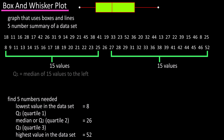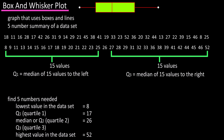To find Q1, we find the median of the 15 values to the left. Since 15 is an odd number, it's the middle value, which is 17. To find Q3, we find the median of the 15 values to the right. Again, 15 is an odd number, so it's the middle value, which is 38.